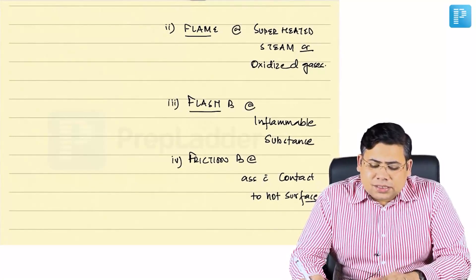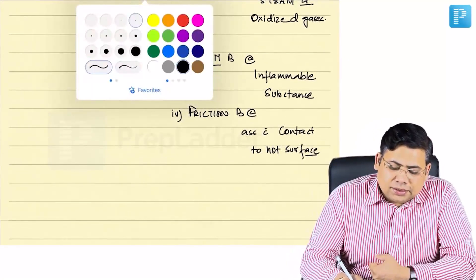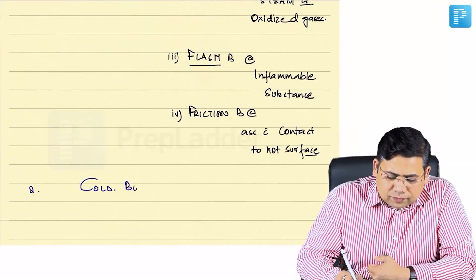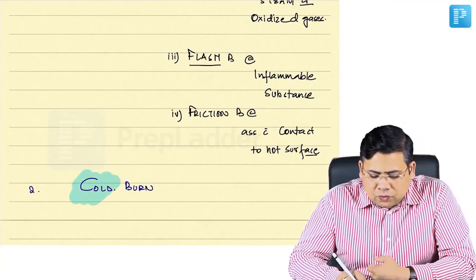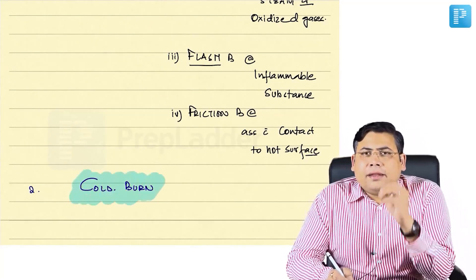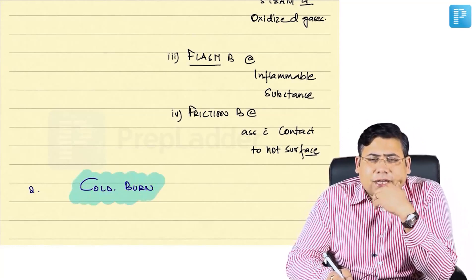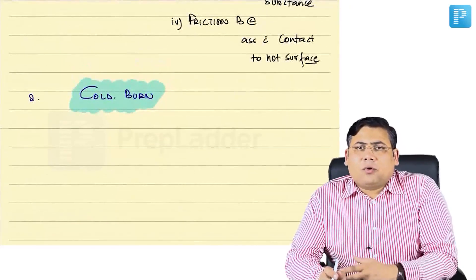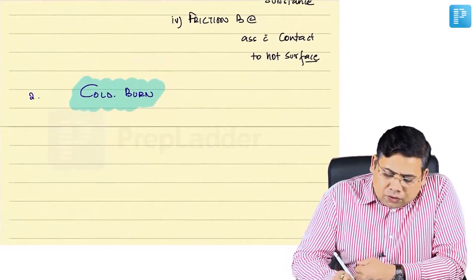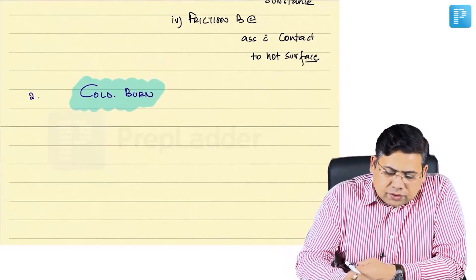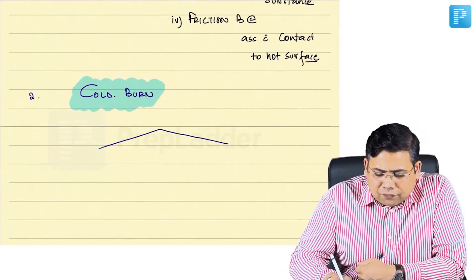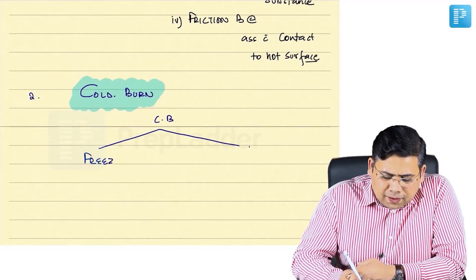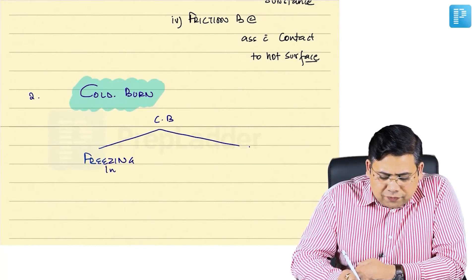What are the other types of special burns? The second category of burns is a cold burn. Cold burn is any damage inflicted due to extremes of temperature — extremely low temperature induces a cold burn. Cold burns are of two types: freezing injuries and non-freezing injuries.